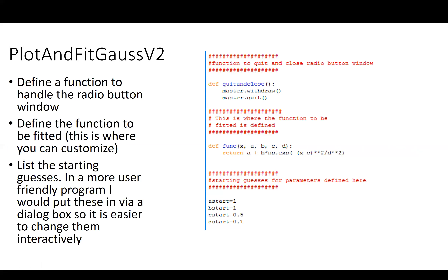I've written a couple of functions to make the rest of the program easy. One is called quit_and_close, which quits and withdraws the radio button window — it's just master.withdraw followed by master.quit — to handle the interference of windows created in pyplot with windows opened elsewhere. Then there's another key function: this is the function being fitted. Here's the parameter list and here is the function itself. In the program, I define these parameters as constants. If you're going to rewrite this program to fit another function, you would define the function here and make the appropriate parameter list.